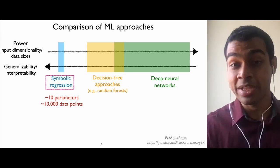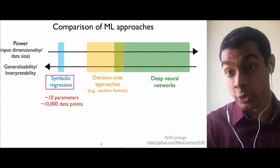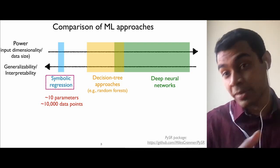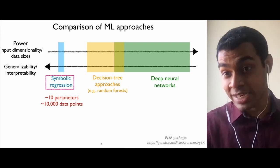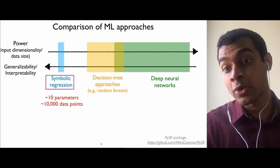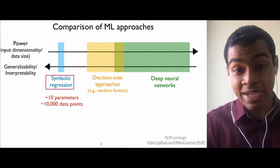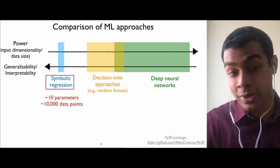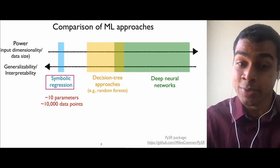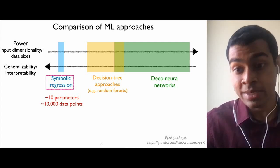So let me go into giving an overview of the machine learning approaches that we used. I've shown here different machine learning techniques along two dimensions. You have deep neural networks, which are very powerful. They can work on input data with large dimensionality or a large data size, for example, high resolution images, but then they are very hard to interpret or the results are sometimes hard to generalize beyond the training set. On the other side is this machine learning algorithm called symbolic regression. It can work only on small data sets, but then it can produce equations which can be readily interpretable and generalizable.